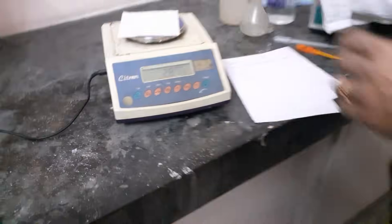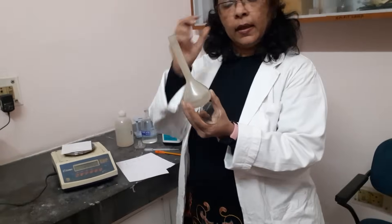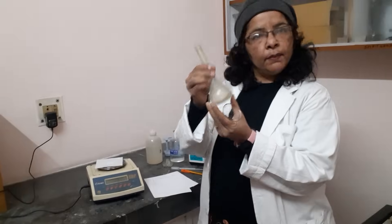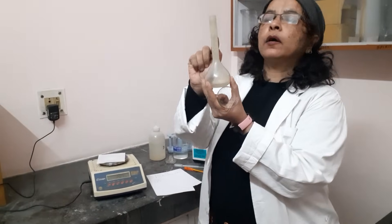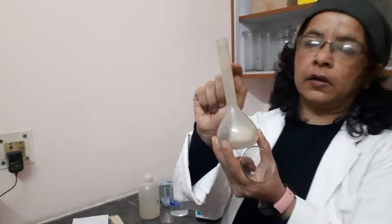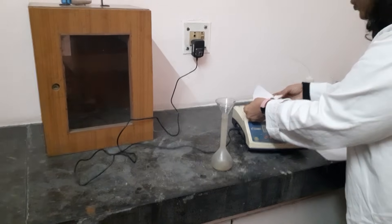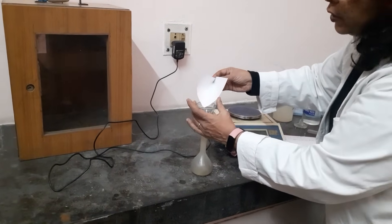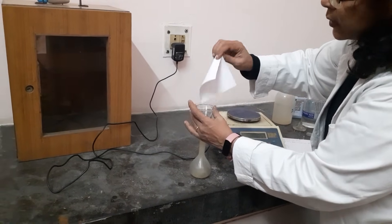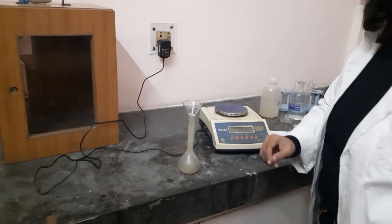Now carefully you will transfer the salt to the measuring flask. This is the measuring flask. Measuring flask can be glass or plastic. I have plastic one. And here there is a mark up to which you have to adjust the volume. This is the funnel. Put the funnel onto the measuring flask and carefully transfer the salt through the funnel.